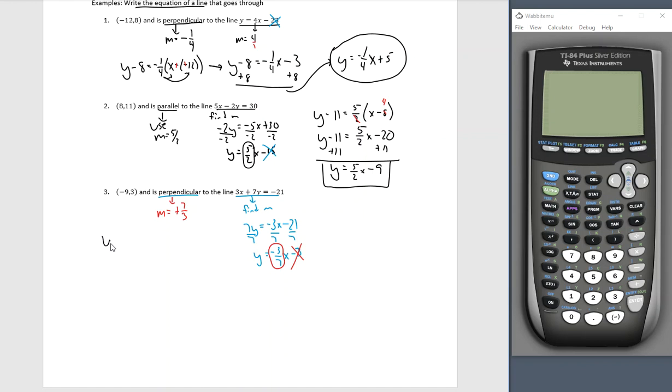So I have y minus 3 equals 7 thirds times x minus a negative 9 minus a negative. That turns into addition. Y minus 3 equals 7 thirds x 7 thirds times 9. We could do it 3 goes into 9 three times. 3 times 7 is 21 or 7 thirds times 9. Remember that 9 is over 1. That'll be a 63 thirds, which looks like a horrible number,